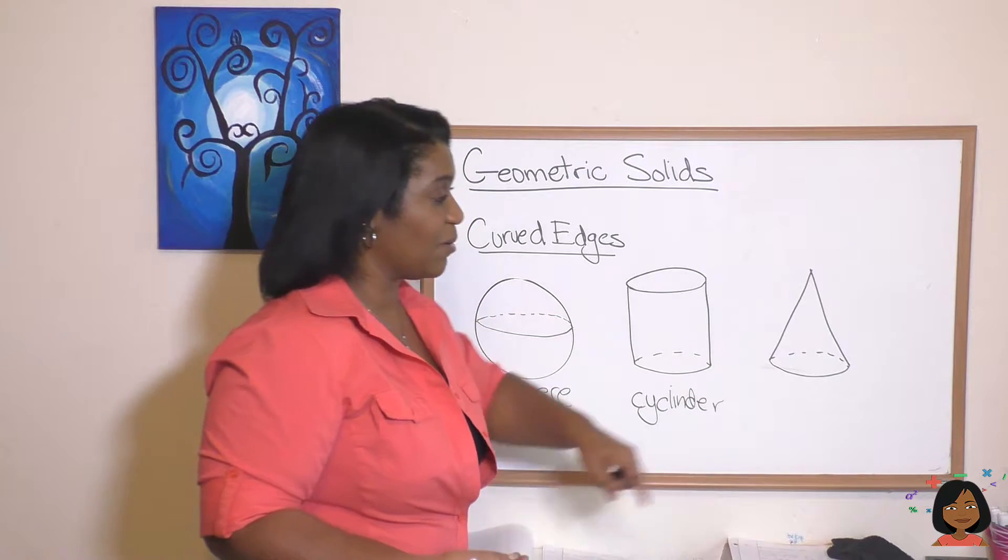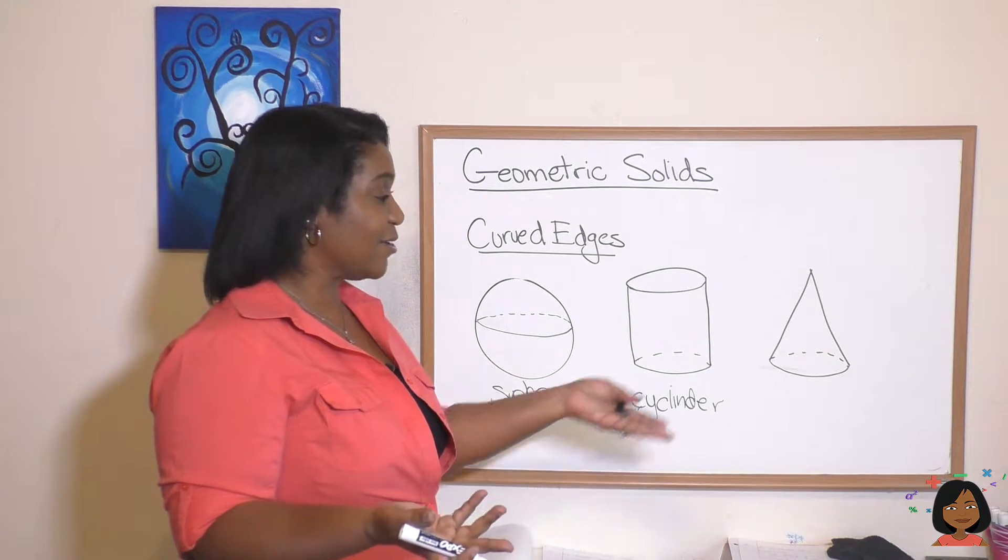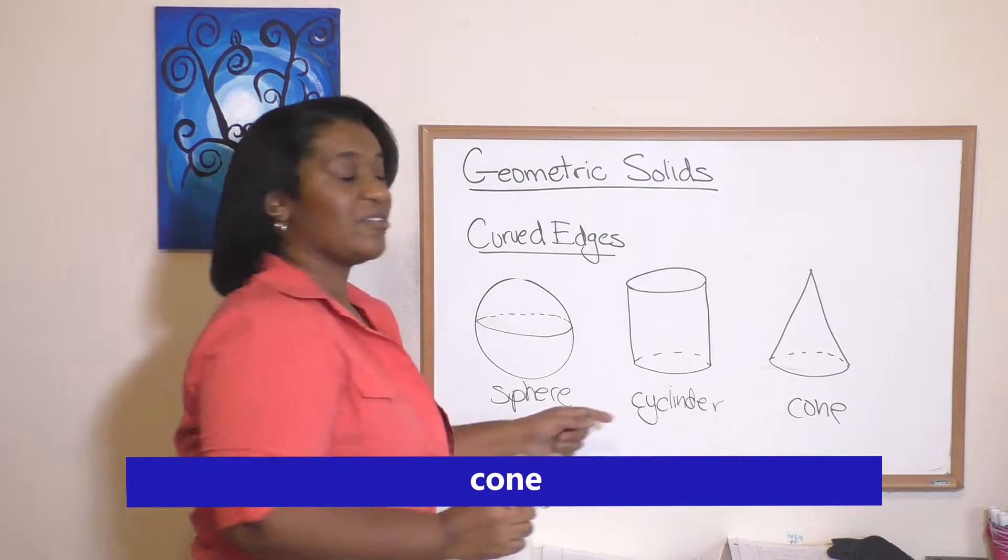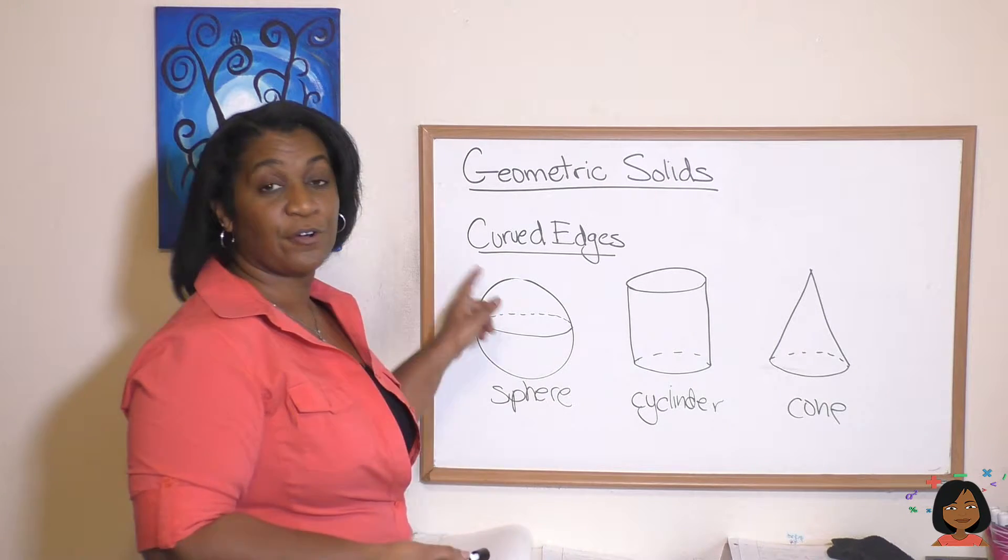The last one we have a circle on the bottom and really it's a triangle that's wrapped around that circle. We call that a cone. So these three - a sphere, cylinder, and cone - are our geometric solids that have curved edges. They have a circle as part of their design.